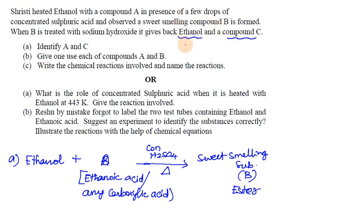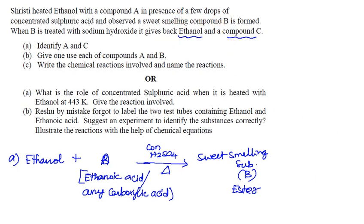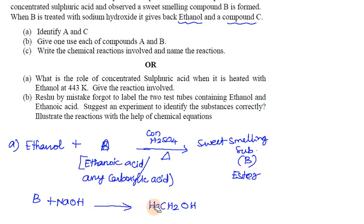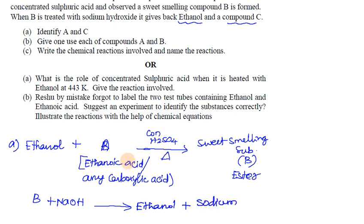Compound B is treated with sodium hydroxide — this is a saponification reaction. The ester reacts with NaOH to give ethanol (CH3CH2OH) and the sodium salt of the carboxylic acid, which is sodium ethanoate (compound C).